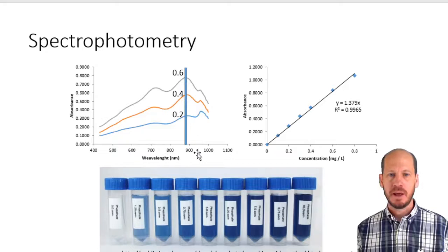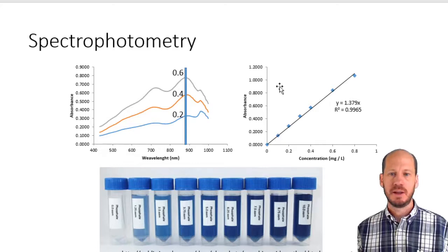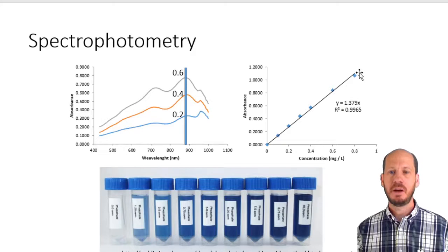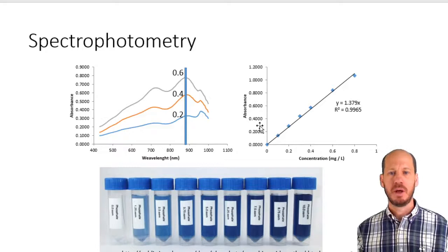You can see the maximum absorption of light is at a wavelength of 880 nanometers. Therefore, it's the wavelength that we choose to measure phosphorus. If we plot absorbance and concentration, we will see a straight line. With increasing color, you have increasing concentration. We can use the equation of this fit to quantify the amount of phosphorus in our samples.